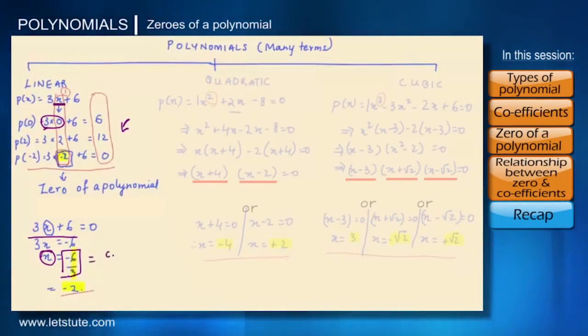If you take a close look, 6 is nothing but the constant term and 3 is nothing but the coefficient of x. The constant term is 6 and we've got minus 6. So it is minus of constant term upon coefficient of x.